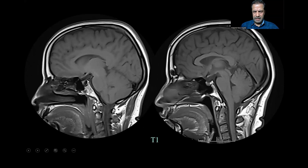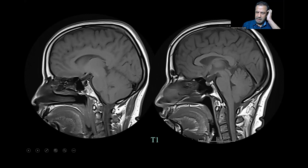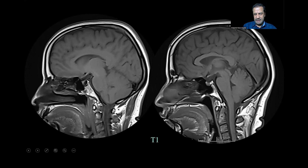This is the cingulate gyrus. Then this is the frontal sinus, nasal septum, nasal bone, tongue, nasopharynx, oropharynx. This is the uvula, and this is the esophagus and trachea, which is just starting there.